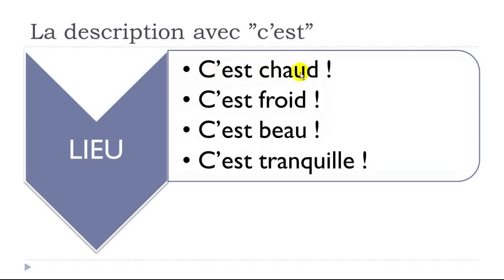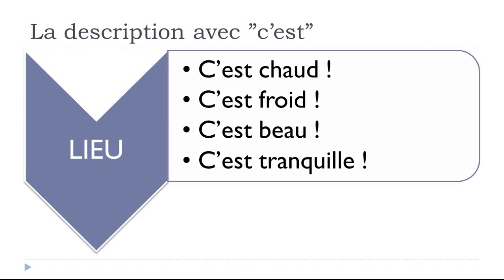Remember: if you want to describe something, you can use C'est — a very common way. It is, this is. But the adjective coming after should always be at the masculine form. Let's see examples for describing a place — un lieu: 'C'est chaud' (it is hot/warm), 'C'est froid' (it is cold), 'C'est beau' (it is beautiful), 'C'est tranquille' (it is quiet). All these adjectives are at the masculine form, even if the place is feminine.